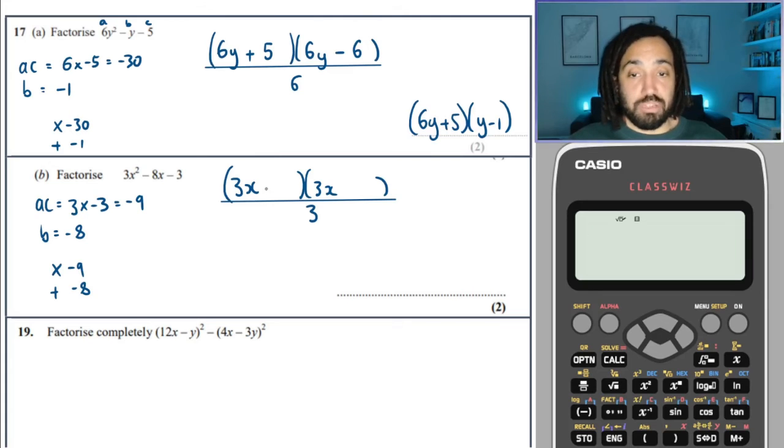So those two numbers, times to make minus 9, add to make minus 8. One must be a positive, one must be a negative, because they times to make a negative. We've got negative 9 and positive 1. That fits the bill. They add to make minus 8. Job done.